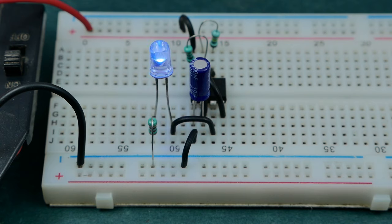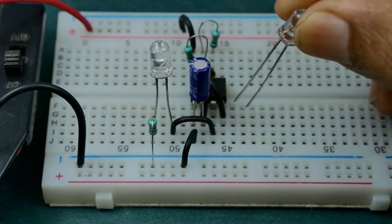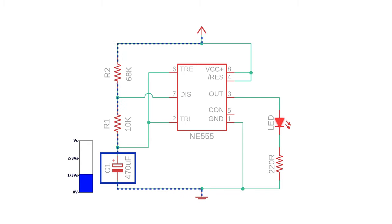This arrangement toggles the LED on and off at regular intervals and the flashing rate can be changed by modifying the value of timing resistor or capacitor used. We'll discuss more about this along with the working explanation later in this video.